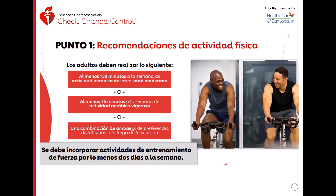Patty pregunta: ¿deben hacer solo 75 minutos para empezar? No, cada semana. Pero esta es la cantidad para actividad vigorosa. Si quieres intensidad más lenta, necesitas hacer más minutos — 150 minutos. Puedes hacer la combinación cada semana: un día puedes hacer más vigorosa y otro día más lento y de menos intensidad.